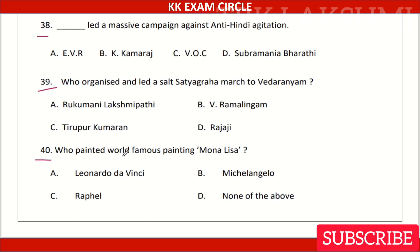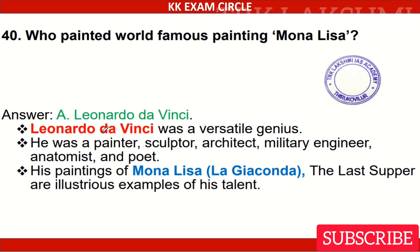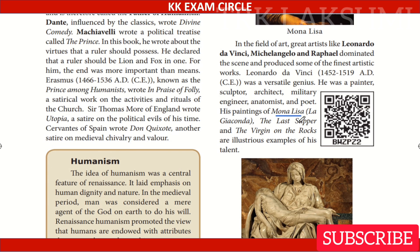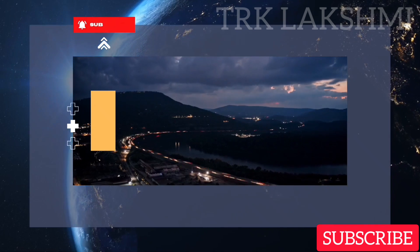Question 10. Who painted the world-famous painting Mona Lisa? Option A: Leonardo Da Vinci. Option B: Michelangelo. Option C: Raphael. Option D: None of the above. Answer: Option A, Leonardo Da Vinci. The Mona Lisa and The Last Supper are among Leonardo Da Vinci's famous paintings.